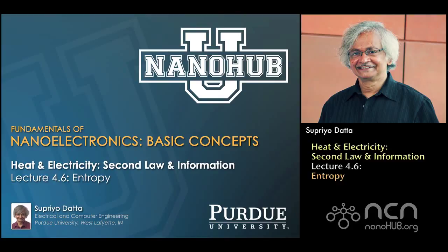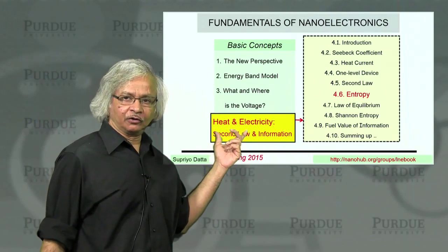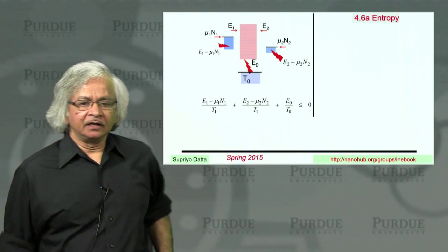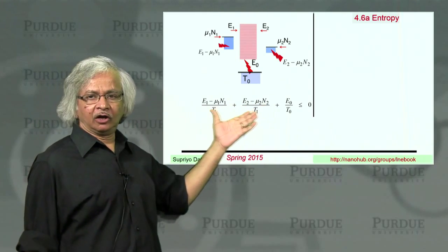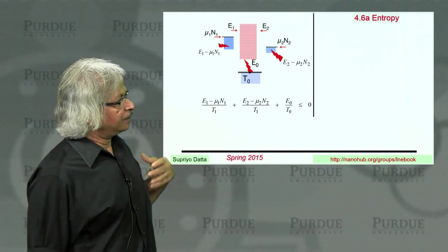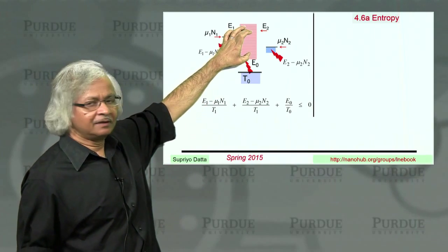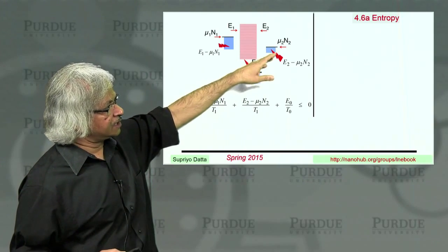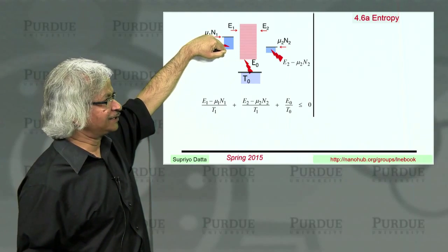Nanohub U, online instruction. Welcome back to Unit 4 of our course and this is the sixth lecture. Now in the last lecture, we talked about the second law and one of the points I made is that although most of this course we have really focused on the channel, the second law is really a consequence of the contacts.